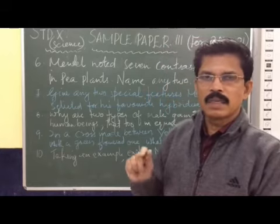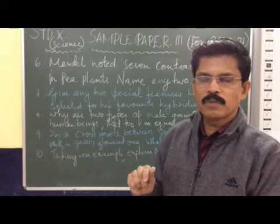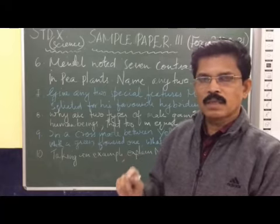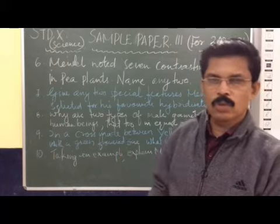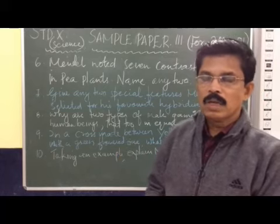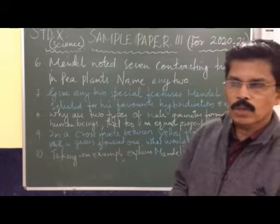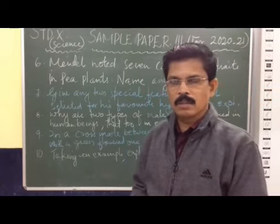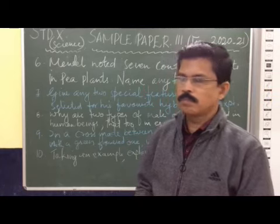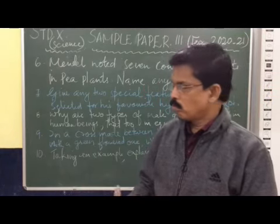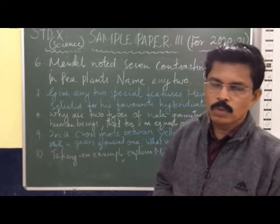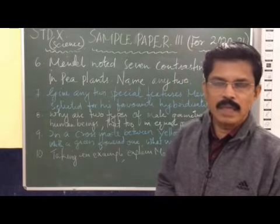Capital T capital T, then second hybrid in F2 capital T small t, again one more capital T small t, and small t small t. This we can show in the cross. The ratio is called phenotypic monohybrid ratio, that is 3:1. You have practiced showing this sketch or illustration of the monohybrid cross. You can revise that. Thank you very much.